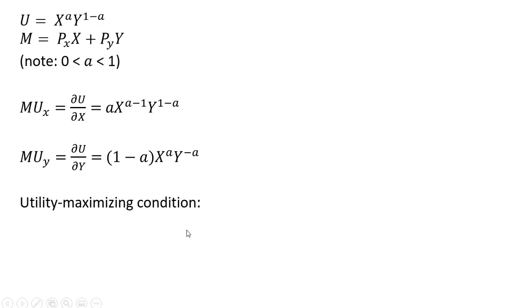The utility maximizing condition. We're going to set the marginal rate of substitution equal to the ratio of the prices. The marginal rate of substitution is the marginal utility of good X divided by the marginal utility of good Y. So making our substitutions in on the left-hand side, on top here I have the marginal utility of good X, and in the denominator I have the marginal utility of good Y. And now we'll simplify some things.